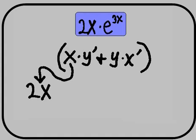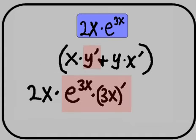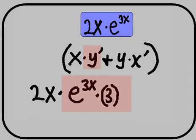X will be 2x. Y prime will be e to the 3x times 3x prime. Prime of 3x is 3.